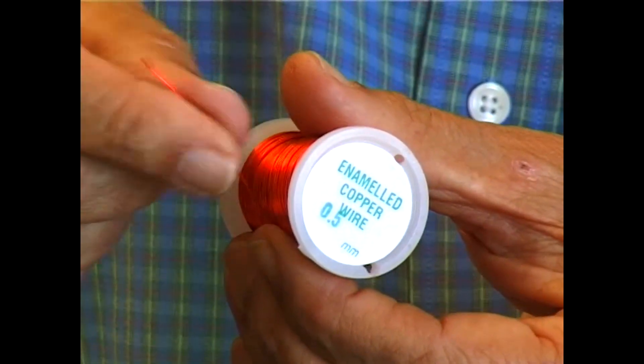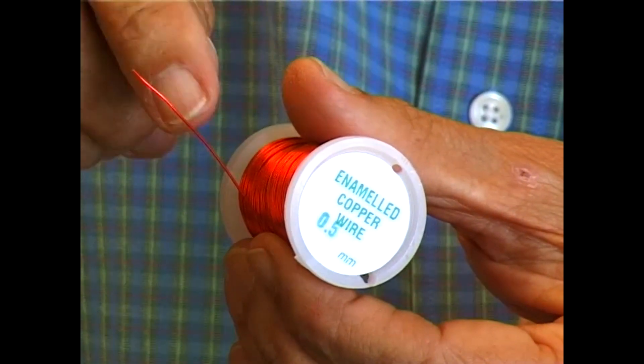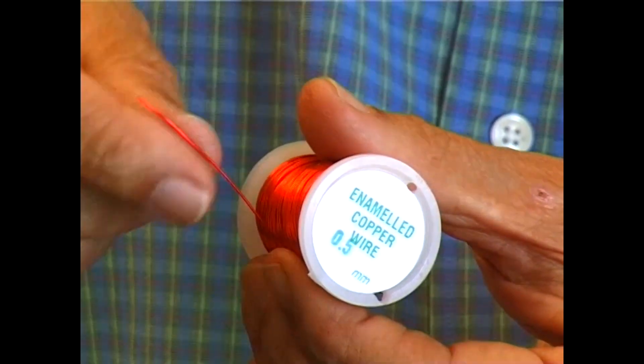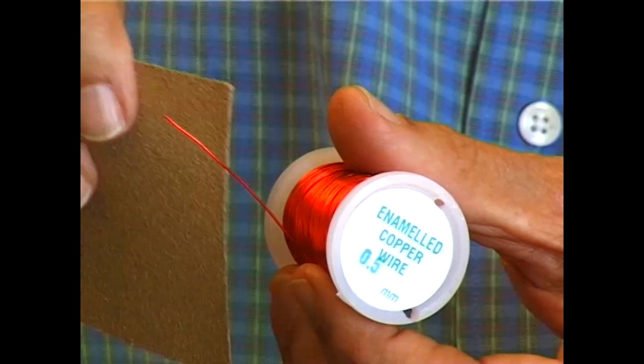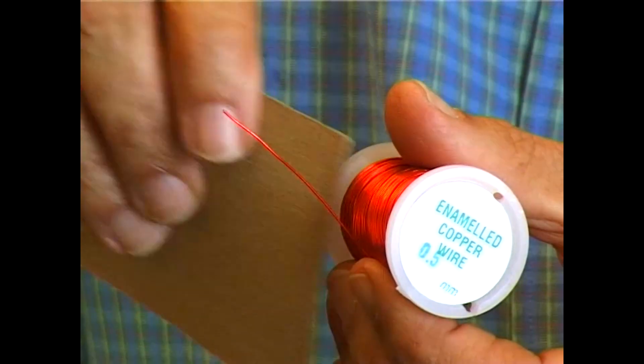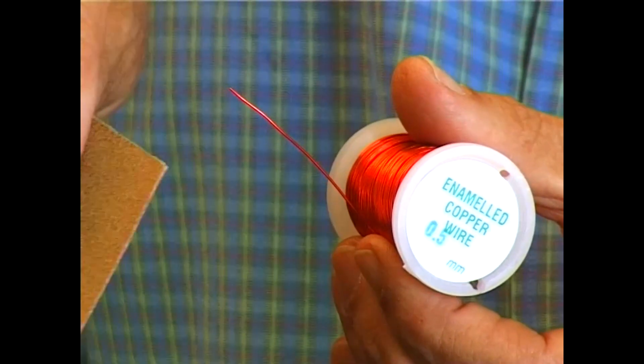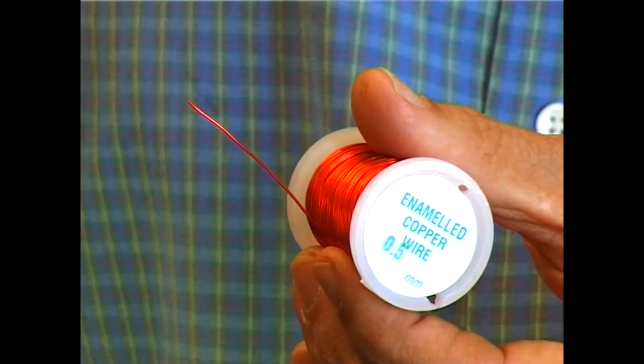Now this copper wire is enameled, which means the metal itself is covered by a clear lacquer, and what you need to do with your sandpaper is to get rid of part of that on each of the straight pieces poking out the sides of your coil and here's how you do it.